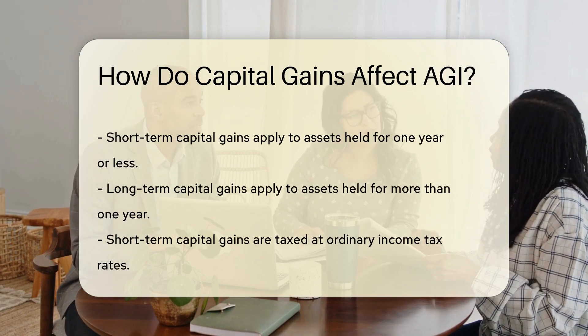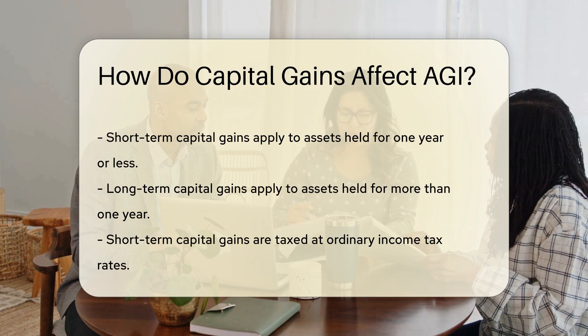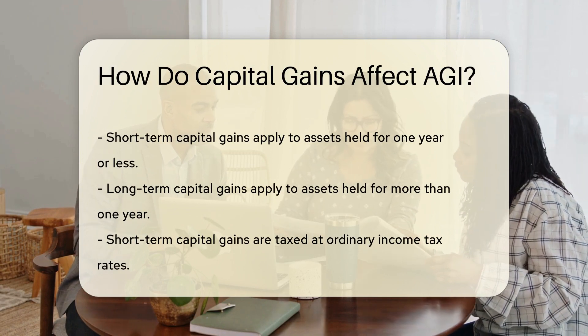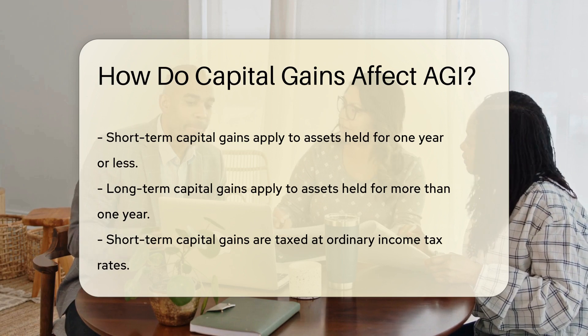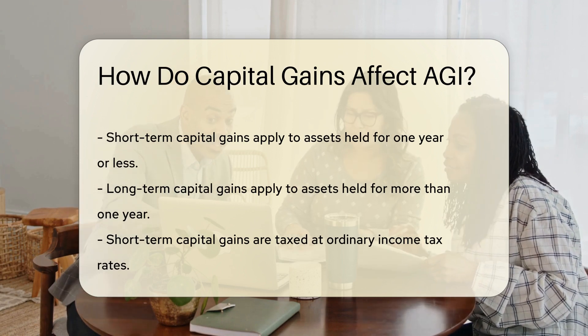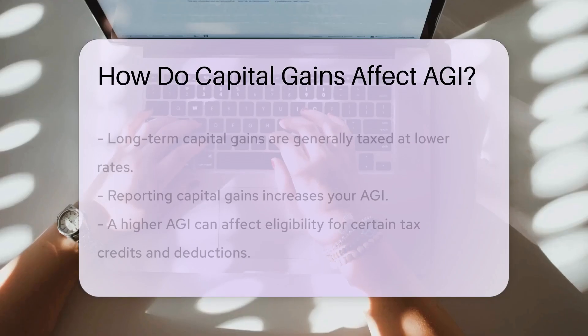The distinction between short-term and long-term capital gains is significant. Short-term capital gains are taxed at your ordinary income tax rates, while long-term capital gains are usually taxed at lower rates.